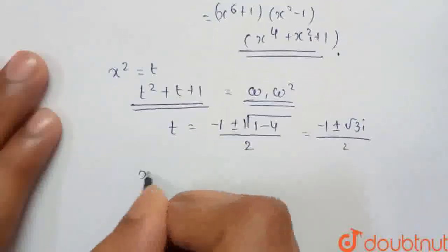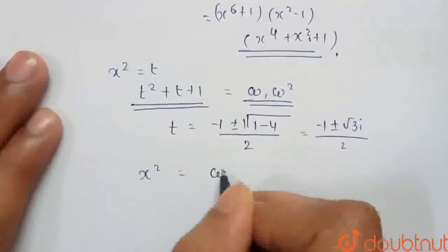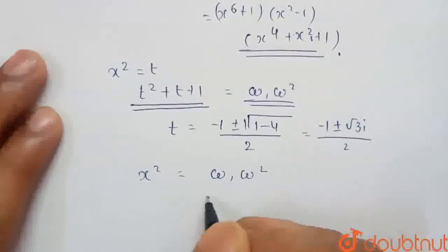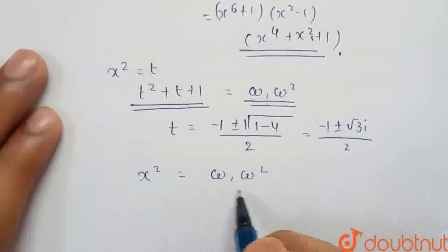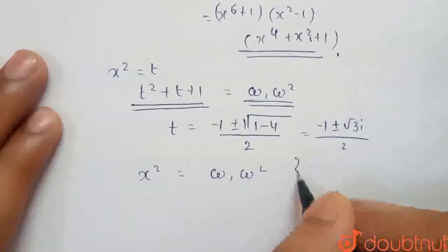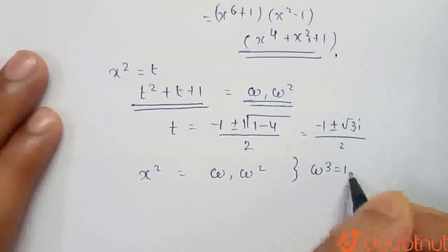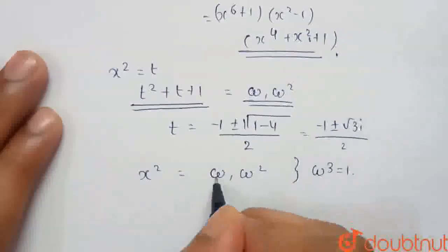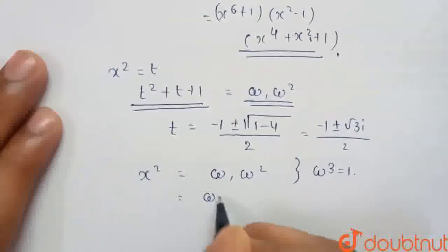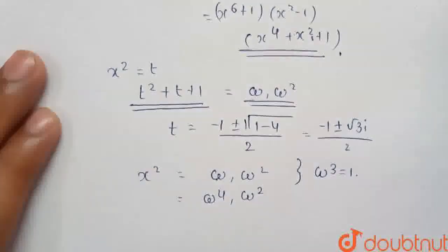Now we can write it as x^2 has two values that is omega and omega square. Now what we will have to see here that we know omega^3 equals to 1. So we can multiply omega^3 to omega. That will be same value only. So we get omega^4 and omega square.